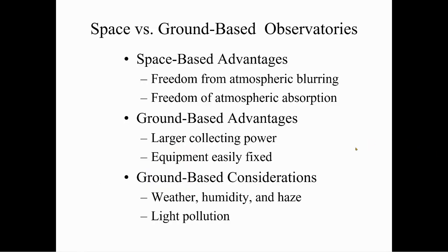Space versus ground-based observatories. Space-based advantages: freedom from atmospheric blurring and freedom from atmospheric absorption. Ground-based advantages: larger collecting powers and equipment is easily fixed. When something happens to a space telescope, since we don't have the space shuttle anymore — the shuttle was made to repair Hubble — we can't easily fix it. Ground-based considerations include weather, humidity, haze, and of course the dreaded light pollution.